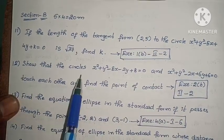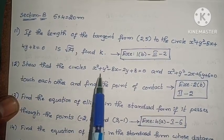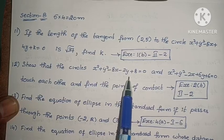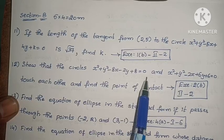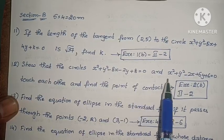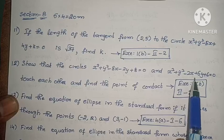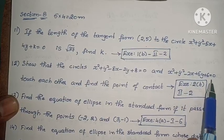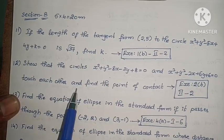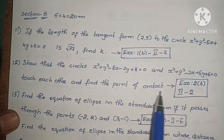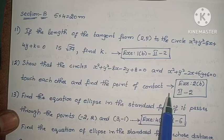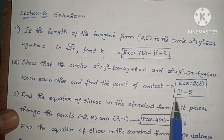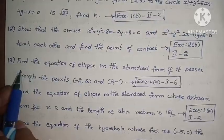Next: show that the circles x² + y² - 8x - 2y + 8 = 0 and x² + y² - 2x + 6y + 6 = 0 touch each other and find the point of contact. This is question 2B, second exercise, second problem.